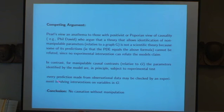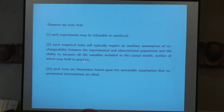Indeed, he's recently advocated the alternative slogan, causation for manipulation, arguing for the ontological primacy of causation. Now, Pearl's views are anathema to those with positivist Popperian philosophy like David, who argue that a theory that allows identification of non-manipulable parameters is not a scientific theory, because some of its predictions, that is the PDE equals the above formula, cannot be refuted, since no interventional experimental evidence can refute the claim. So it's not part of science, according to many people. In contrast, for manipulable causal contrasts, parameters that are in principle subject to experimental tests, every prediction made from observational data may be checked by an experiment involving interventions.